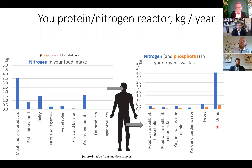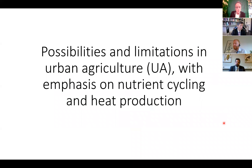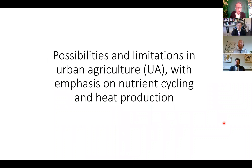When we talk about phosphorus, which is another essential element, it's not the same distribution between feces and urine. Today's topic: possibilities and limitations in urban agriculture with emphasis on nutrient cycling and heat production.